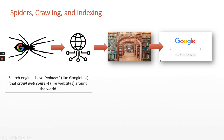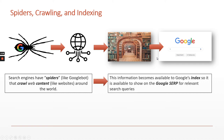Search engines have spiders like Googlebot that crawl web content around the world. This information becomes available to Google's index so that it is available to show on the Google SERP — the search engine results page — for relevant search queries.